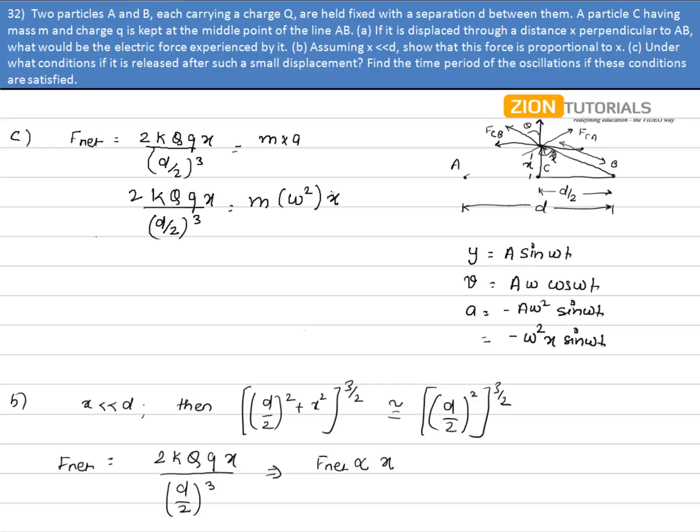Now solving this equation for omega, first of all we get x is cancelled from both the sides. We have 16KQq divided by d cube is equal to mass.